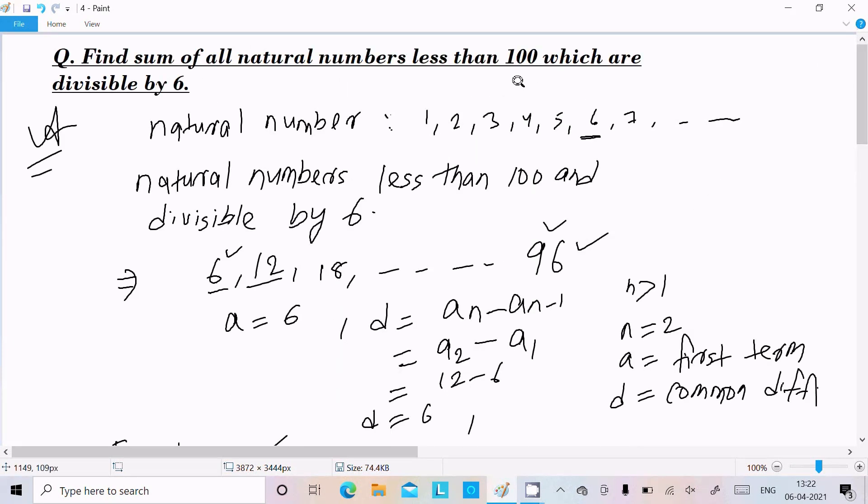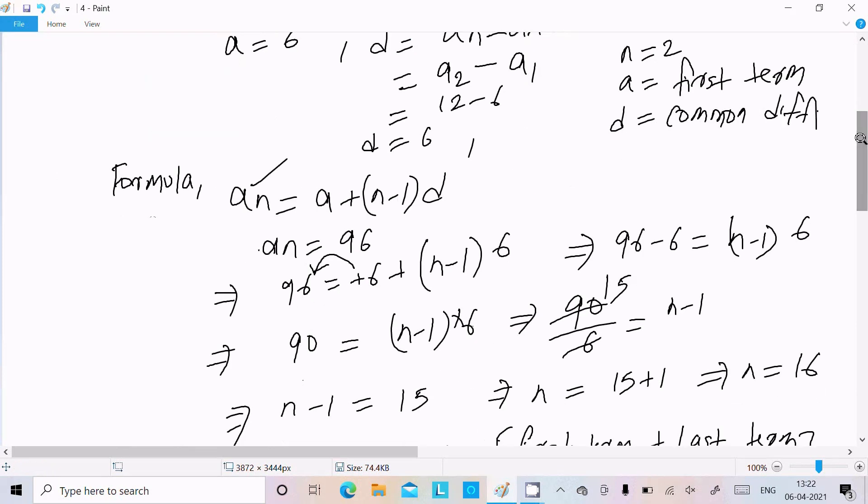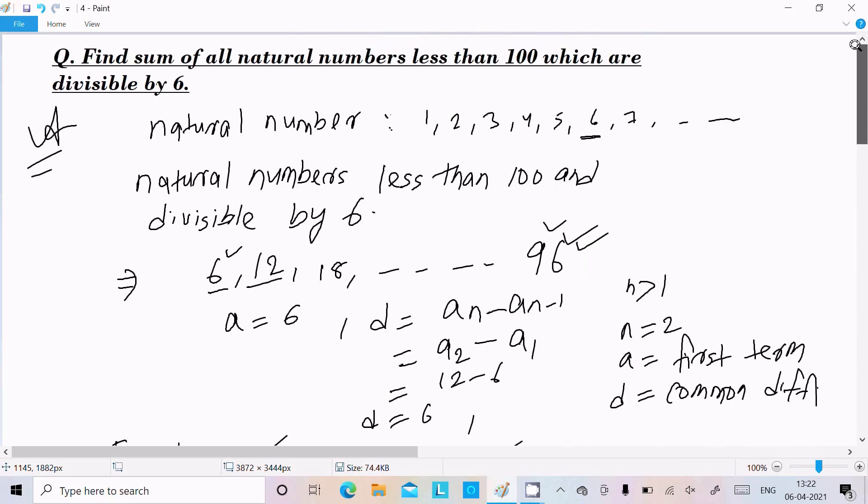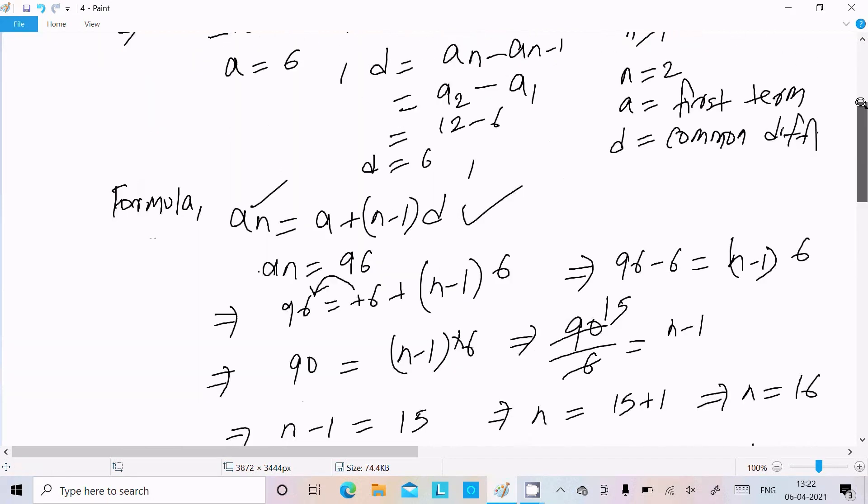So right here, natural numbers less than 100 and divided by 6. So this is the first term, d, we calculate from here, calculate n, now use this formula and here you get this required sum. The sum of 6 + 12 + 18. So this is the way we can solve this kind of question.